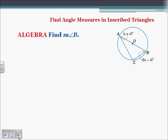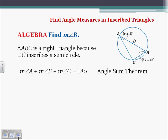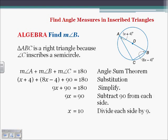Finding the measure of angle B. Triangle ABC is a right triangle because angle C inscribes a semicircle, so angle C equals 90. All angles must add up to 180. Substituting, with A equal to x plus 4 and B equal to 8x minus 4, we get 9x plus 90 equals 180. Subtracting 90 gives 9x equals 90, so x equals 10. We're looking for angle B: 8 times 10 minus 4 equals 76.